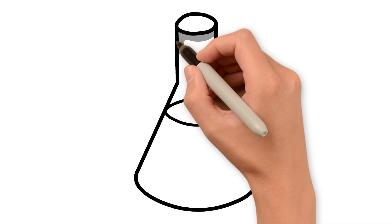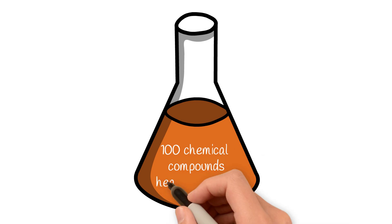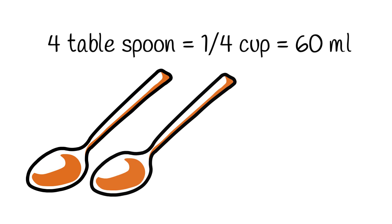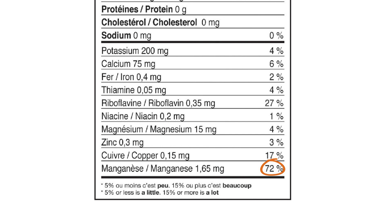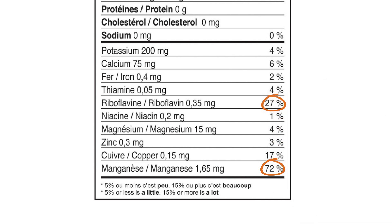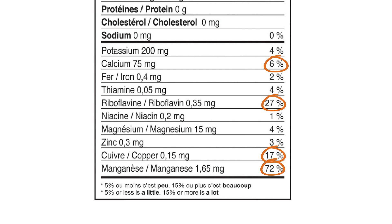Maple syrup contains about 100 chemical compounds, many with known health benefits. A single 60-milliliter or quarter-cup serving of maple syrup meets 72% of the daily nutritional requirement for manganese, 27% for riboflavin, 17% for copper, and 6% for calcium.